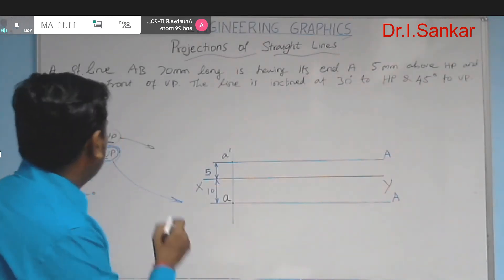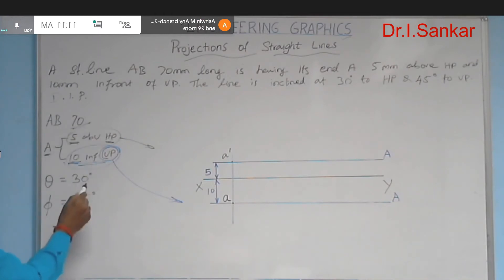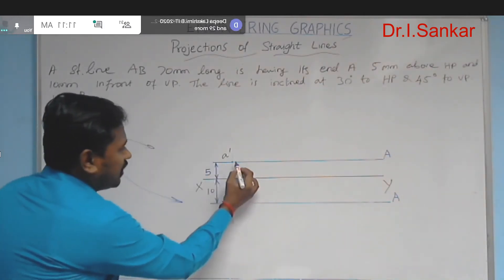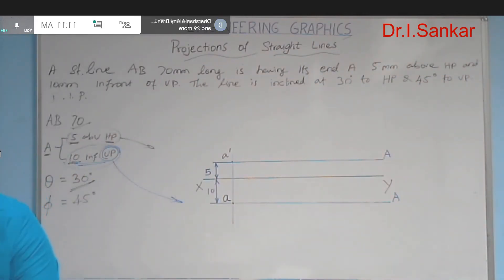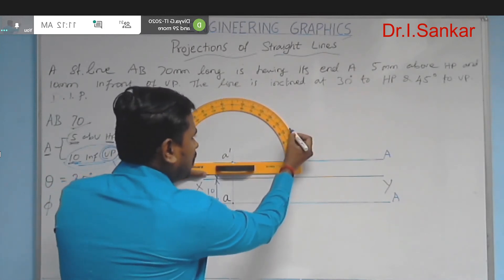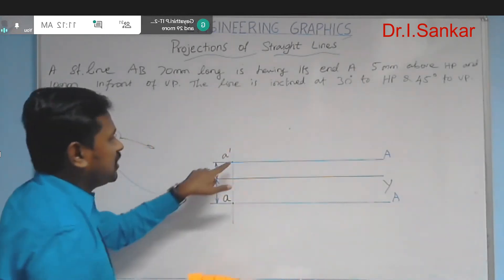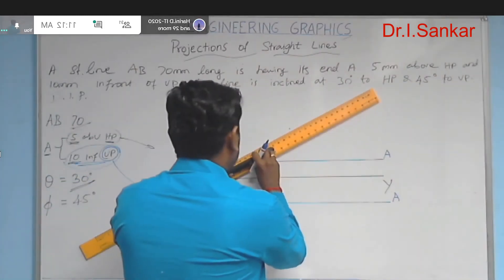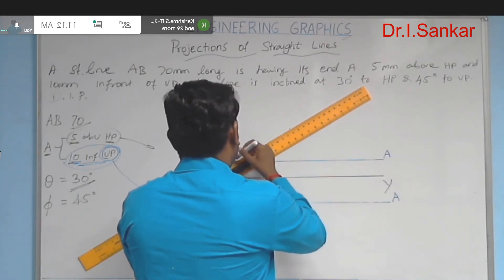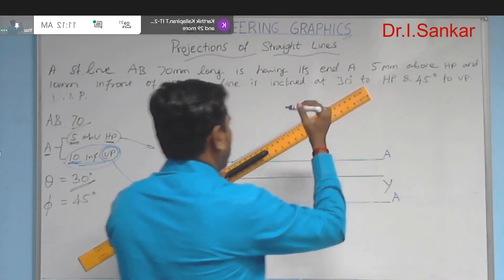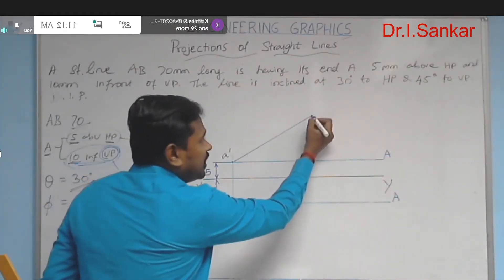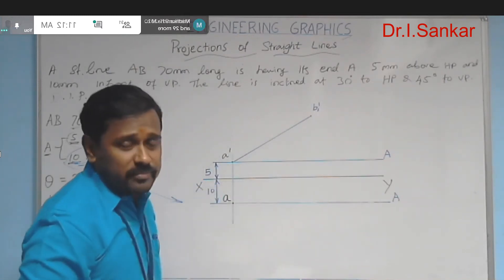First, use the true length 70mm and the true inclination with HP, which is 30 degrees. Measure a 70mm line with 30 degree inclination to the XY line, starting from a' (a dash).